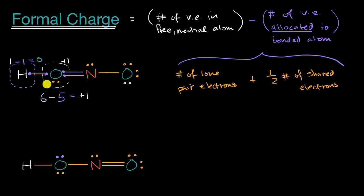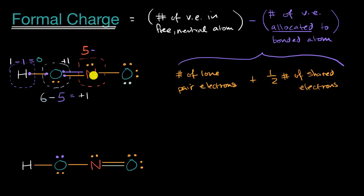Now, what about the nitrogen? A free, neutral nitrogen has five valence electrons. We subtract the valence electrons allocated to the bonded nitrogen: we see one, two, three shared electrons, and then two more lone pair electrons — so that is five. Five minus five gives zero formal charge on the nitrogen.